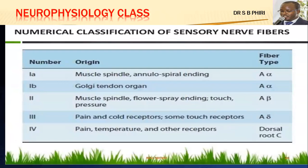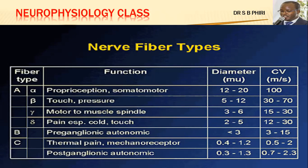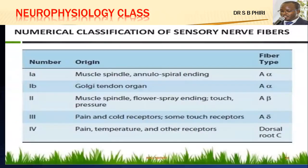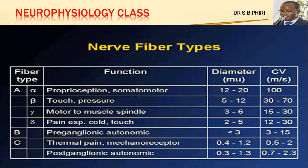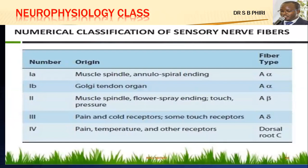Sometimes there is also a numerical classification of sensory nerve fibers. This second table differs from the first — the first table classifies all nerve fibers regardless of whether they are motor or sensory, but this second table describes only sensory nerve fibers. You won't find motor gamma fibers in this table because A-gamma are mainly motor.